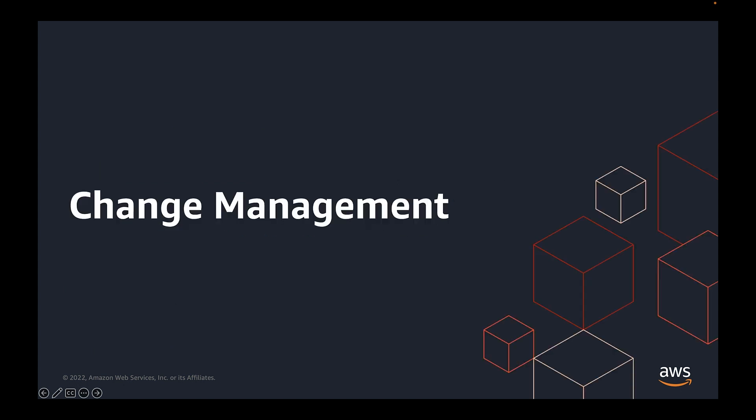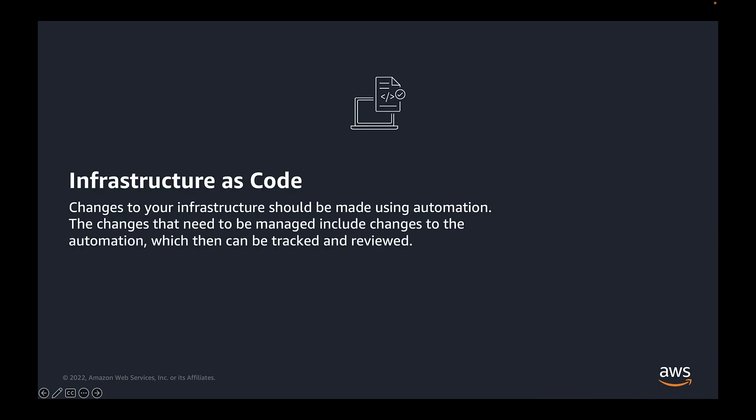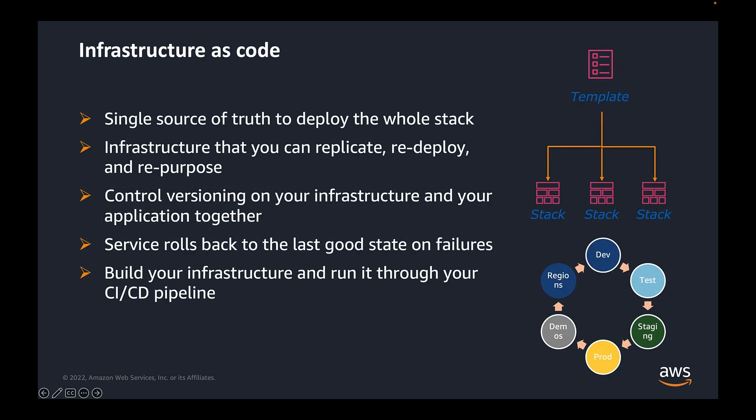Let's dive deep into change management first. Changes to your infrastructure should be made using automation. The changes that are needed to manage include changes to the automation, which can then be tracked and reviewed. The great benefit of using infrastructure as code is it being a single source of truth for your complete deployment. Infrastructure can easily be replicated or redeployed across different environments, and you keep control of both versioning your infrastructure and your applications together.